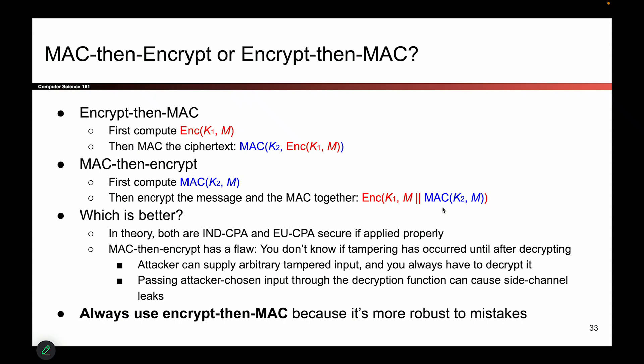There are very subtle flaws associated with the fact that you have to decrypt first. In particular, the attacker can give any arbitrary value to Bob, and Bob is forced to decrypt it because he doesn't know if this is correct until he has done the decryption. So if you use MAC-then-encrypt, you're basically creating a Bob who will decrypt anything you give to him. If I give Bob some garbage value, Bob is forced to first decrypt it and only then can he check the MAC and realize it's invalid and throw it away. You've basically created someone who can be tricked into decrypting any value of your choice.